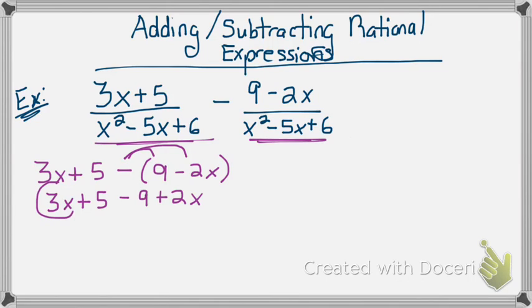Well, my two like terms are 3x plus 2x, which gives me 5x, and 5 minus 9, which gives me negative 4.